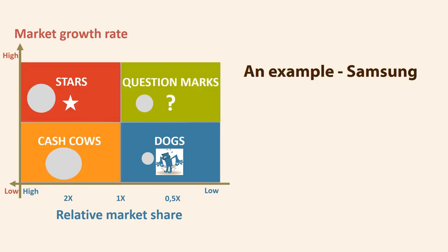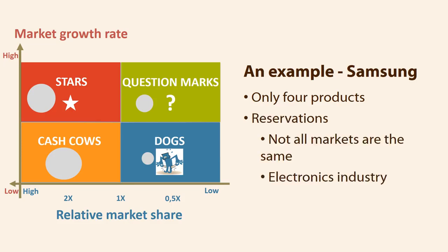We shall now review an example of the use of the Boston Consulting Group matrix using products from Samsung. For the sake of clarity, only four products are used in the example, though Samsung has many more in each category. It is worth noting that the model does not look the same in all markets in the world. In the electronics industry, products move very quickly between different fields, so keep in mind that this example is from 2019.